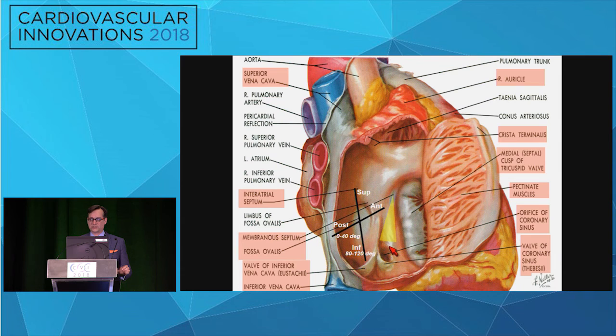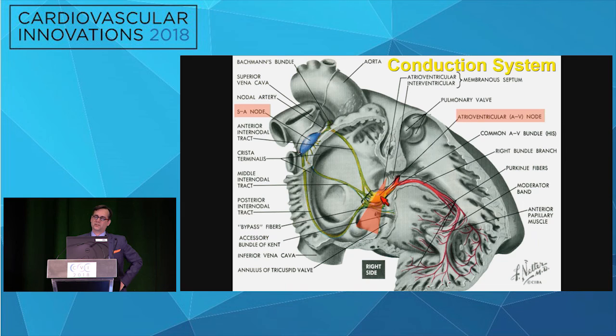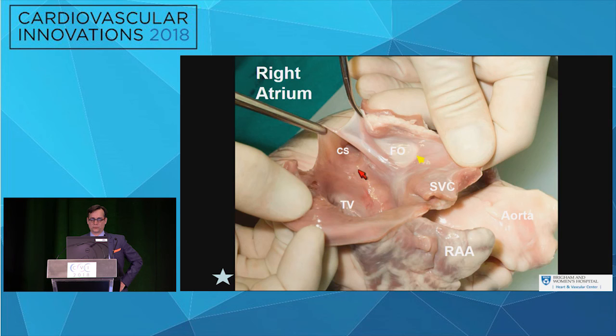The coronary sinus should always make you think: septal and posterior leaflet commissure. The coronary sinus, septal leaflet attachment, and what we call the tendon of Todaro represent the triangle of Koch. The final thing to always keep in mind is where the AV node is: at the apex of that triangle is where the AV node sits, along with the bundle of His. Many of our tricuspid interventions work at that septal-anterior leaflet coaptation line near that commissure, making it very easy to cause complete heart block.